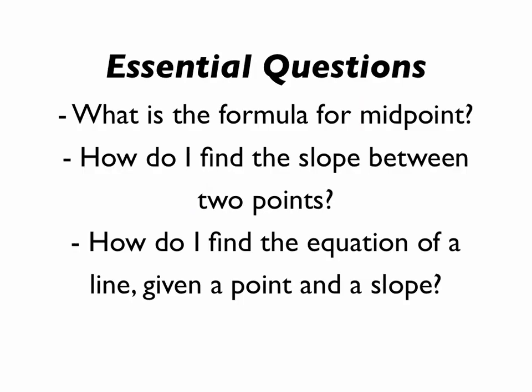Alright, let's summarize midpoint formula. Remember, average your x's and then average your y's. How do you find the slope between two points? Well, one of two ways. It's either the rise over the run, or you can do it algebraically by doing y2 minus y1 over x2 minus x1. How do you find the equation of a line? Well, if you're lucky and you know what the y-intercept is, you can use y equals mx plus b. Otherwise, use the point-slope form of a line. y minus y1 equals m times x minus x1.